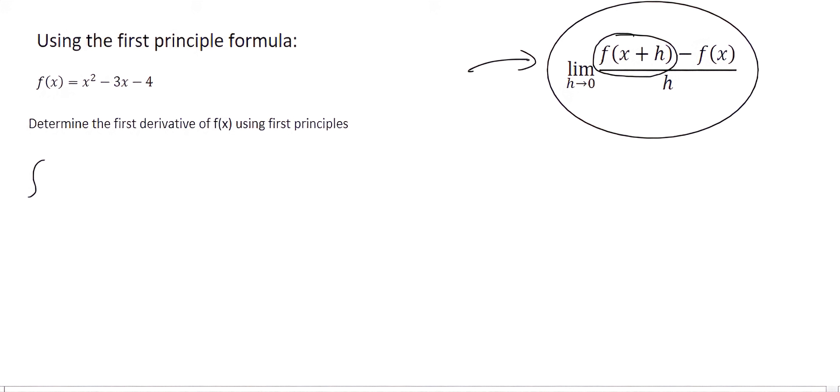Now what f of x plus h means is you take the original formula that has been given to you and wherever you see x you're going to replace that with x plus h. So there I see an x so I replace it with x plus h. Then I see there's a little square, then it's minus 3, then I see another x. I say x plus h and then there's a minus 4.